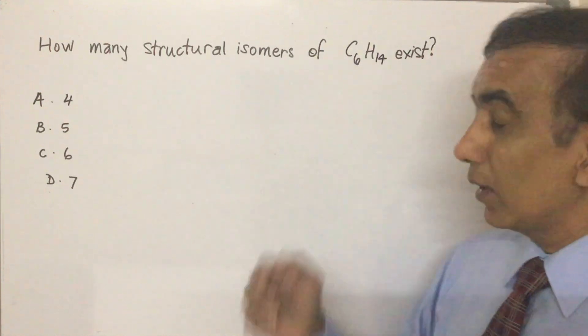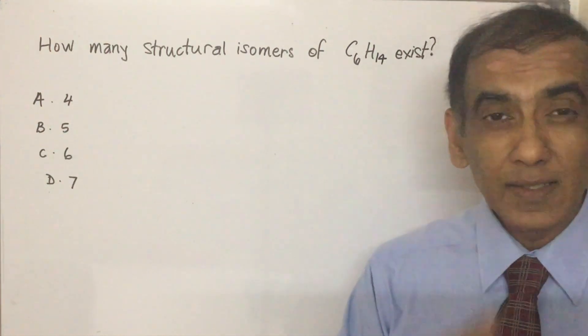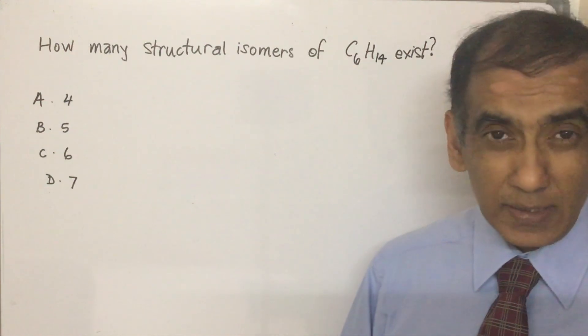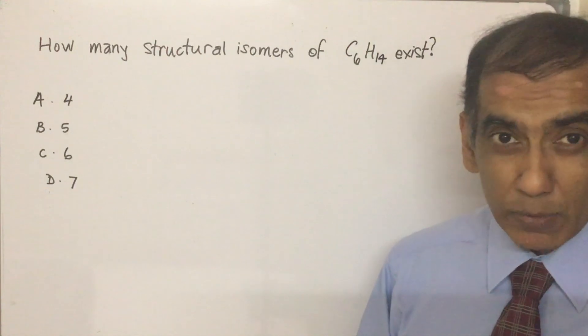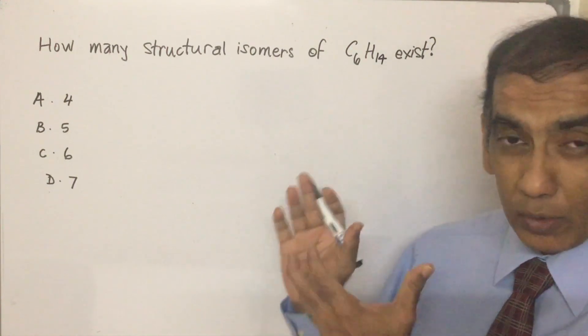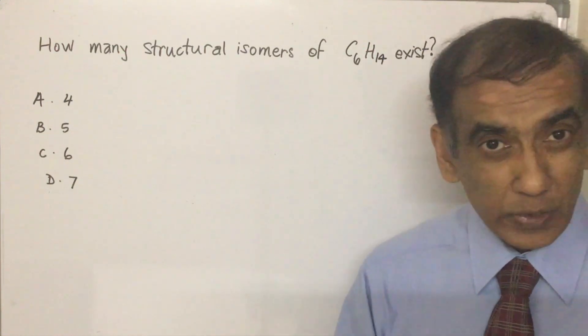How many structural isomers of C6H14 exist? C6H14, it's hexane and structural isomers means you'll be thinking you've got to draw all of them out and that's the way that you'll be able to answer the question.